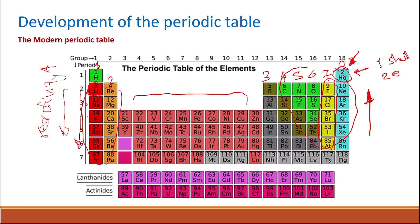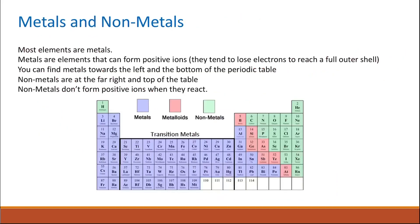The period, or row, tells us about the number of electron shells an element has. Each new period means there is a new outer shell of electrons. Looking at the modern periodic table, you can predict the properties of an element based on its position. Most elements overall are metals, found mainly on the left, while non-metals are found on the right.